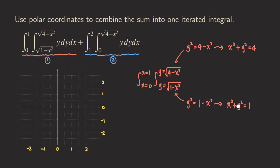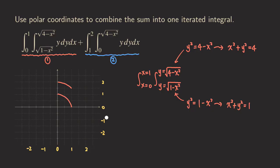We are not going to graph the whole circle. We are only going to graph those portions of the circles between X equals zero and X equals one. This one is a unit circle and we only graph the arc in the first quadrant. The other one is a circle of radius two centered at the origin, and we only want to graph the region up to this portion right here. This is the region of integration for integral one.